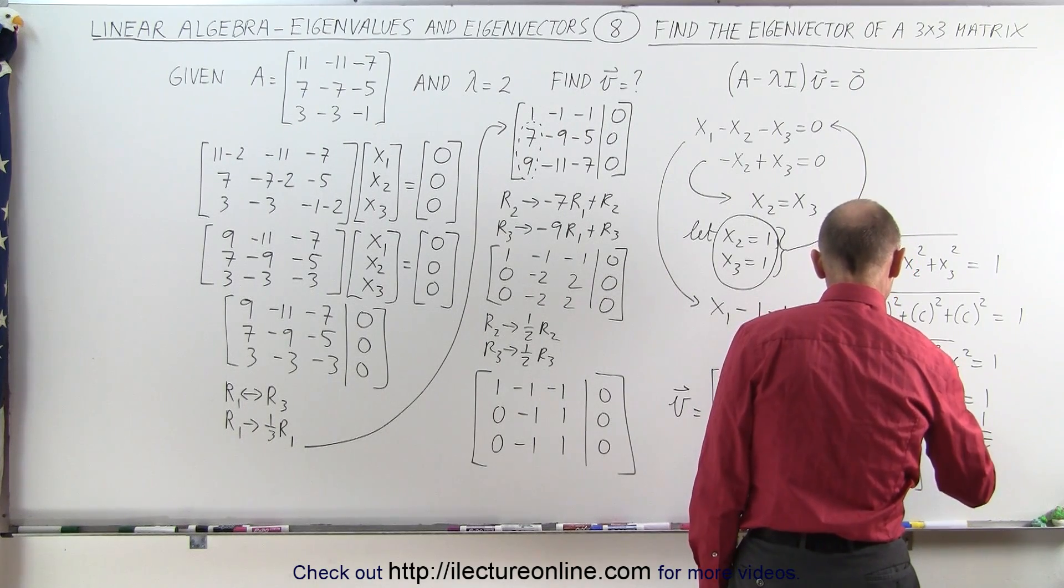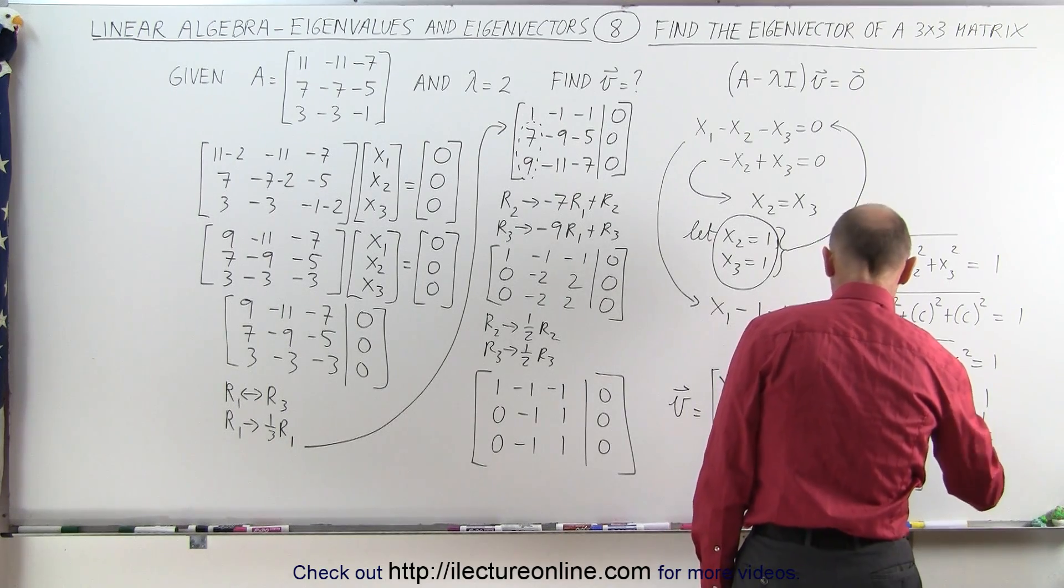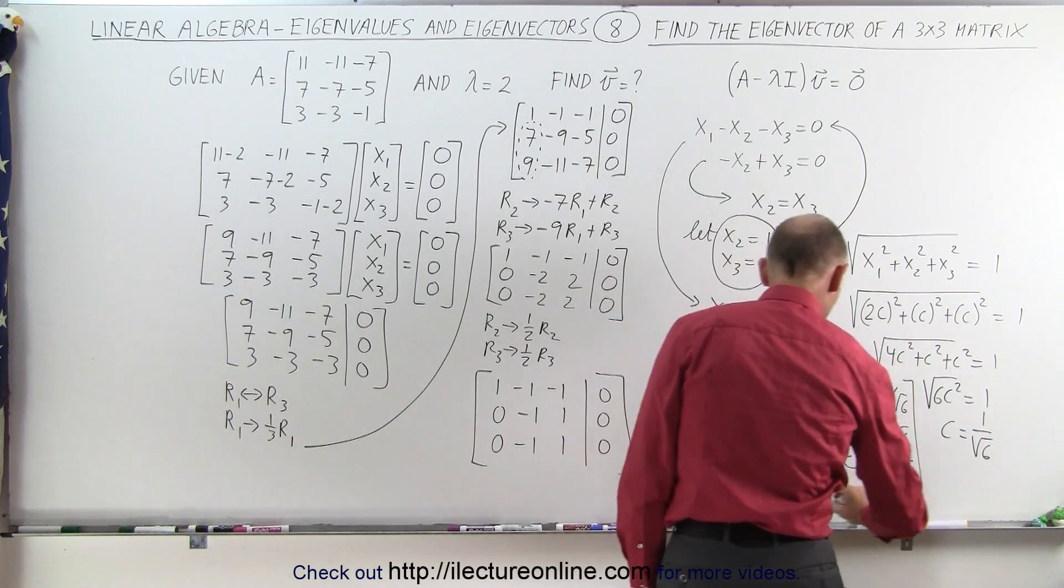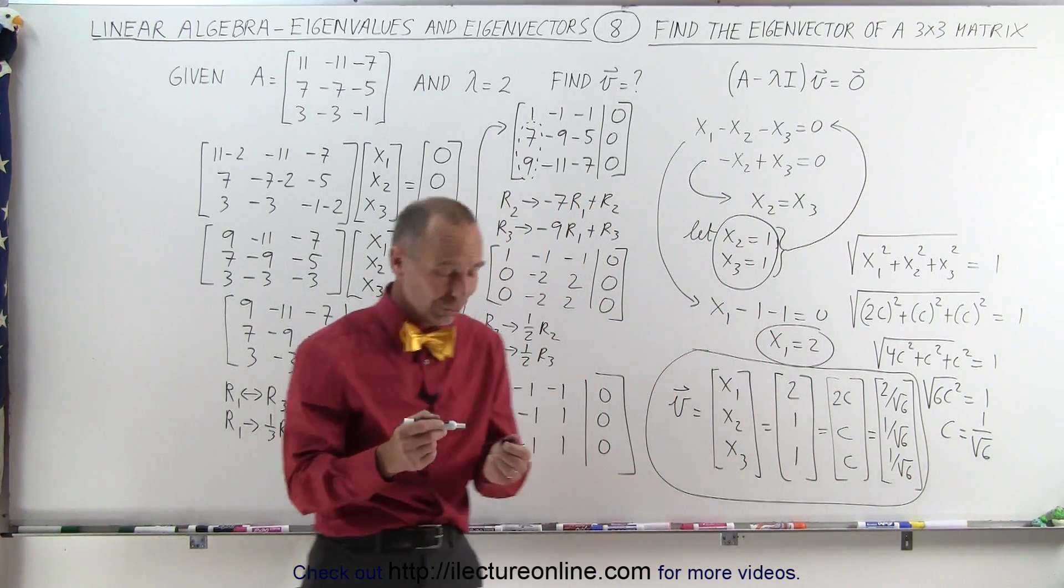And 2c is 1 over, I should say, 2 over the square root of 6. And this is now the same eigenvector in normalized format, in case they're asking you to do that.